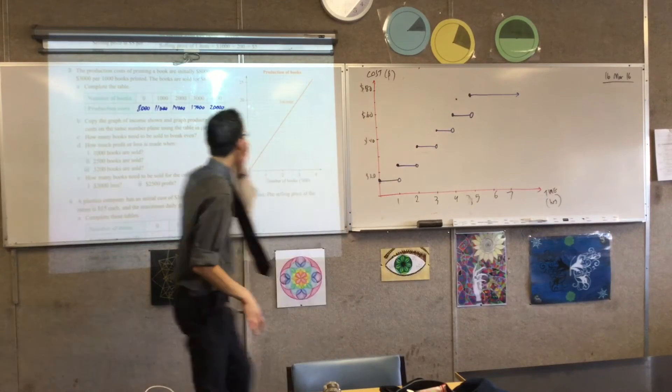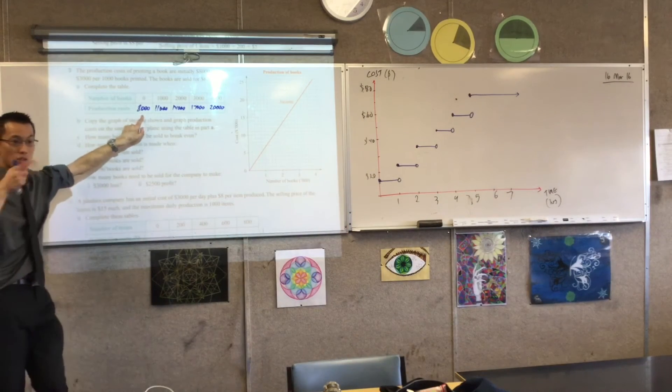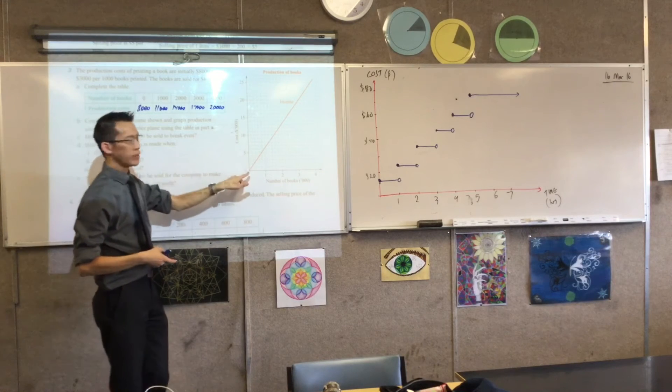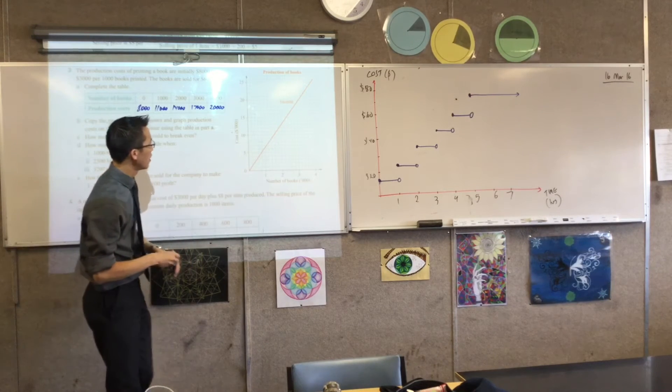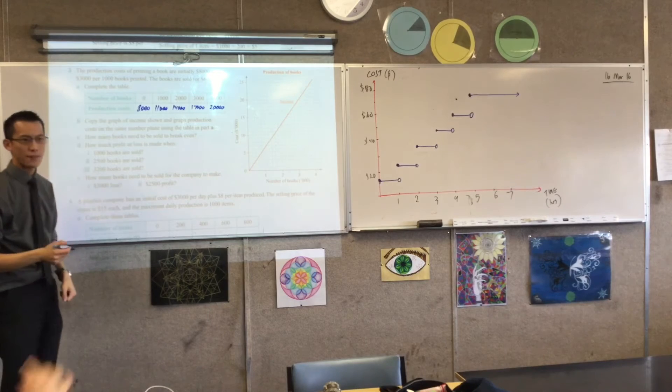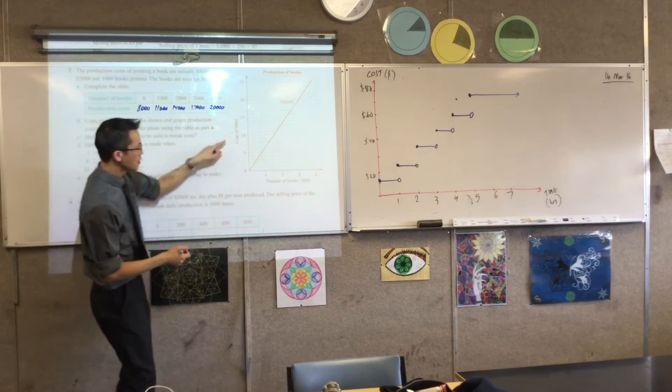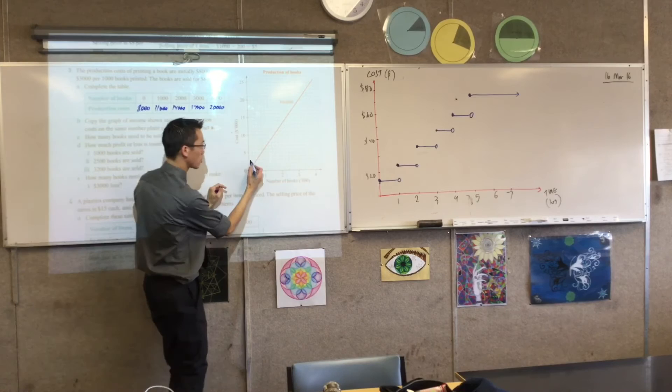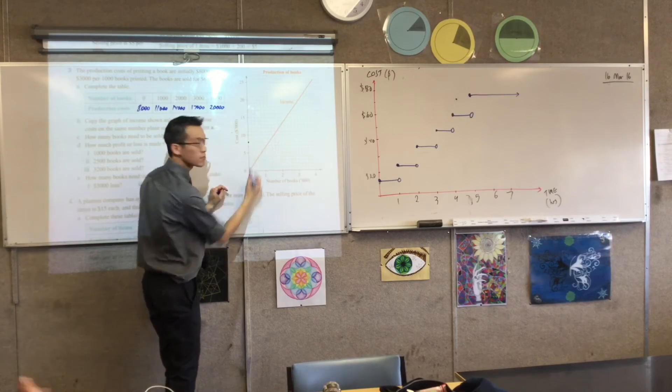Now, what happens when we put these together? $8,000, the initial value. That's the vertical intercept. So, where's $8,000? Look carefully at my scales. This is in thousands of dollars, so $8 looks like it's going to be here.